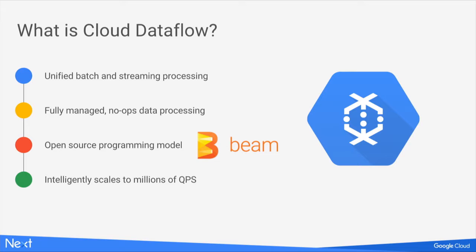To summarize why customers are using Cloud Dataflow: Cloud Dataflow offers a unified way of doing batch and streaming. You get access to a fully managed environment, so you can spend your time optimizing your pipeline code instead of managing server infrastructure. We offer an open source programming model so you are not locked into one vendor — you can run Beam pipelines in Cloud Dataflow or on-premises with other runners such as Spark and Flink. We can also scale from 10 records per second to millions of records per second.